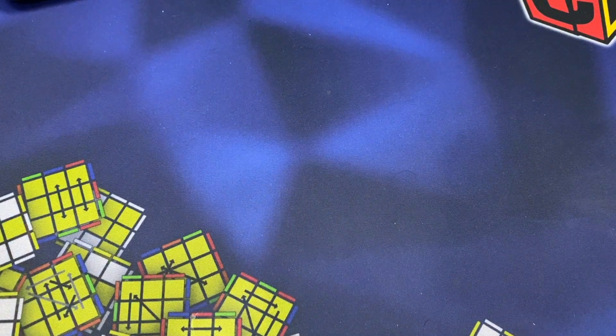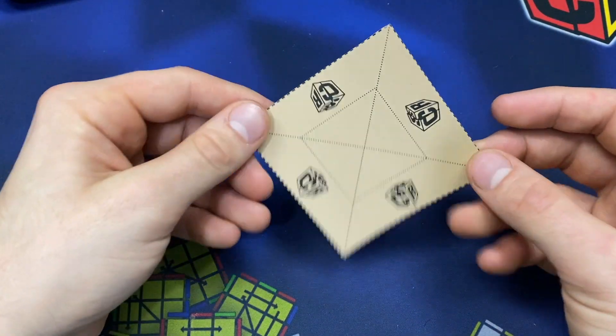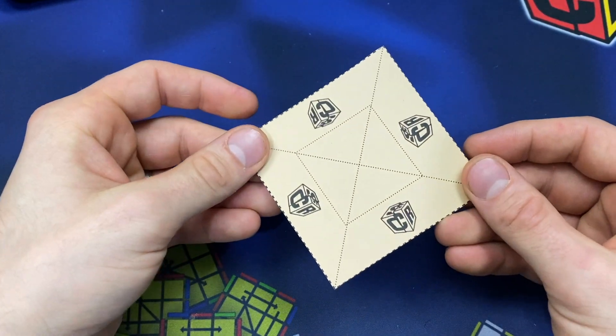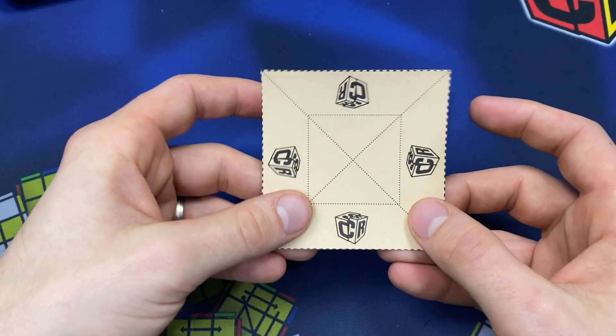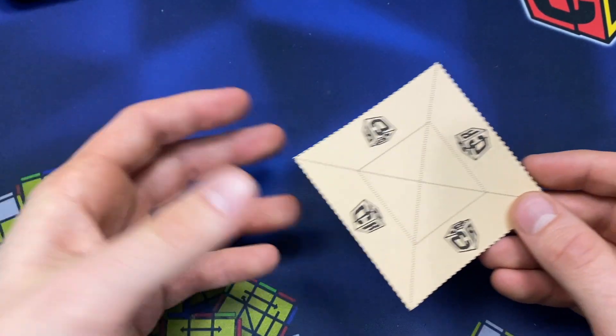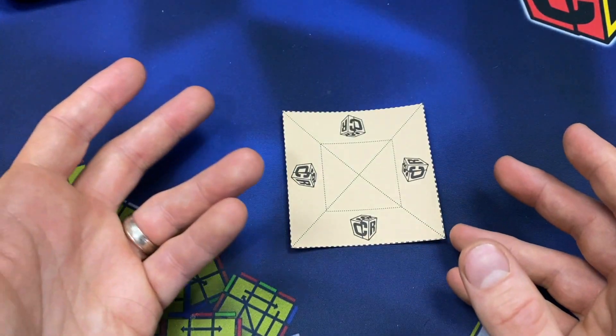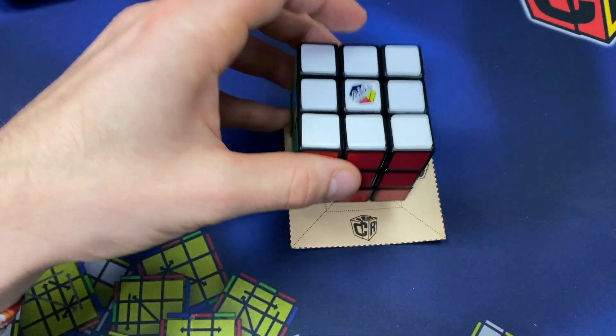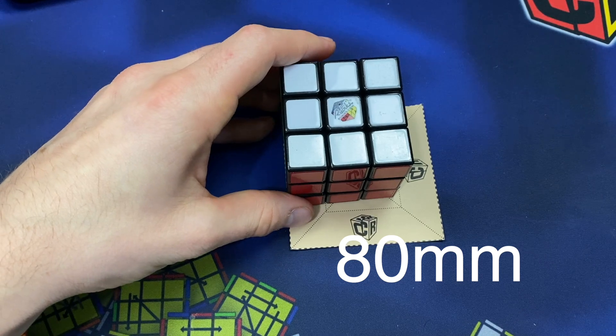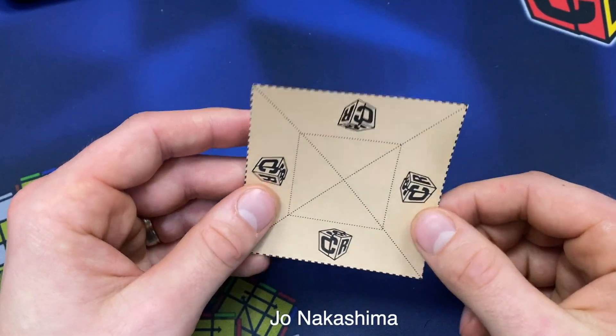Hey, Sean here from speedcubeview.com. We're going to make a cube stand. I have a little template here if you'd like to use that. They are in the description. You just print it out, and for this cube stand it doesn't need any tape or cutting after you have a nice square. The size of this is a little bit bigger than a cube.